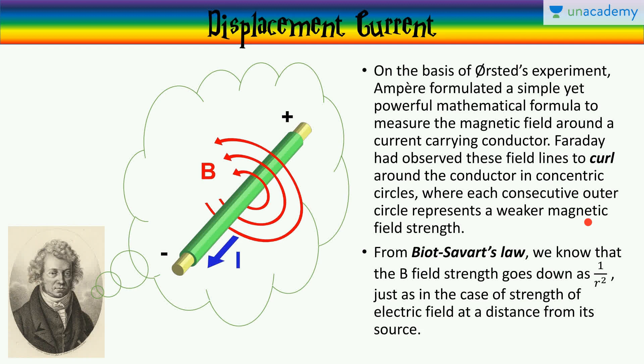Now, this is from Biot-Savart's law, which says that the magnetic field strength around a current element goes down as 1 by r squared, which is exactly what you would expect if this was in the case of electric field, which as the distance increases from the source, the electric charge, the electric field goes down as the inverse square law predicts.